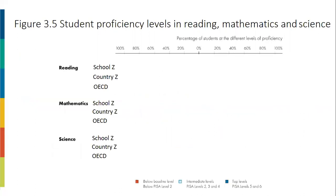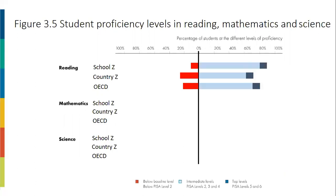Figure 3.5 shows the comparison between School Z, Country Z, and the OST average. The bold line indicates the baseline level 2. The value on the left-hand side indicates the percentage of students that did not achieve level 2. Take reading as an example: in School Z, only 10% of its students fall below the baseline level, compared to 30% at the country level in Country Z, and 22.6% among OST countries on average. On the right-hand side of the bold line representing the baseline level 2, you can see the percentage of students that scored at intermediate levels and top levels in reading.